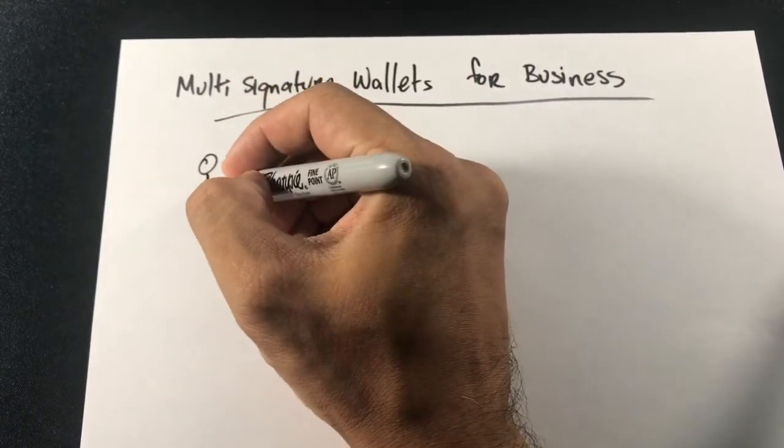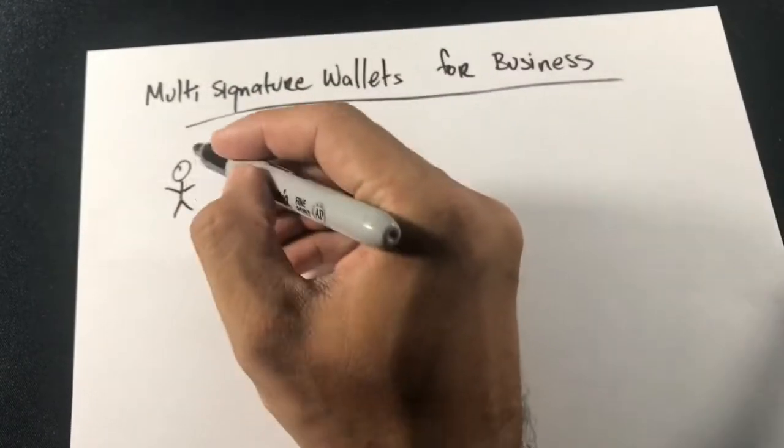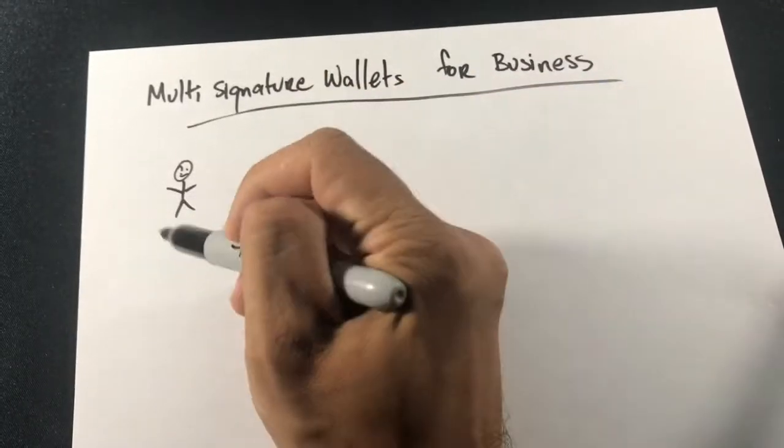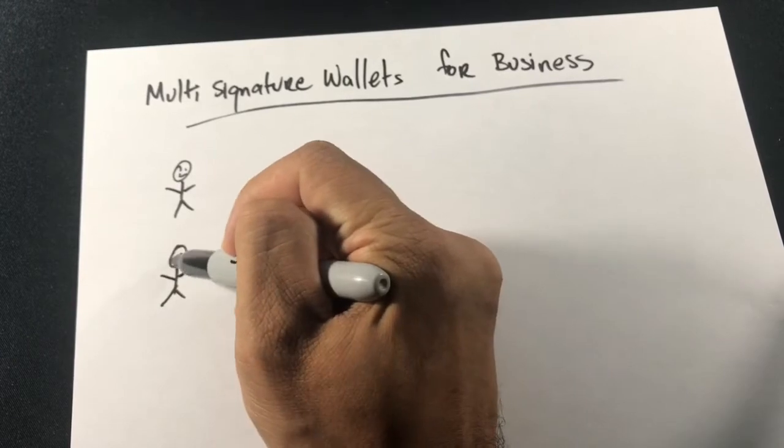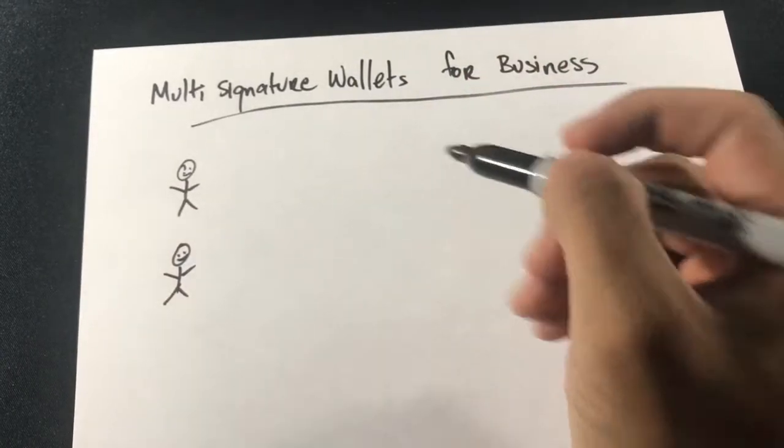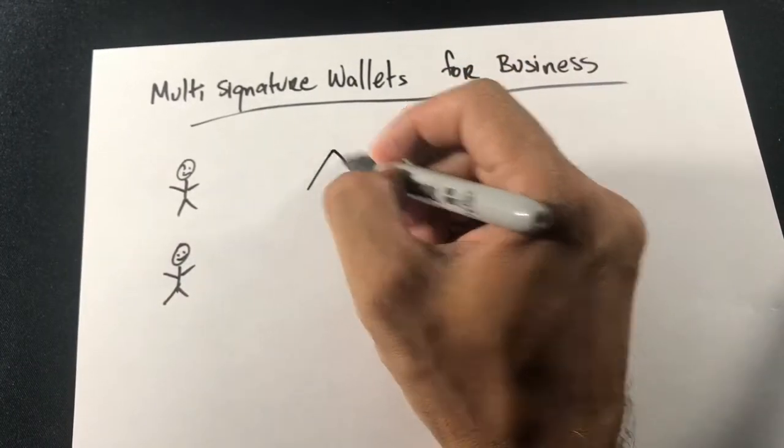What that means is you can basically create an escrow account for sales or a multi-signature wallet so that two out of three or three out of five signers need to actually approve the withdrawal.